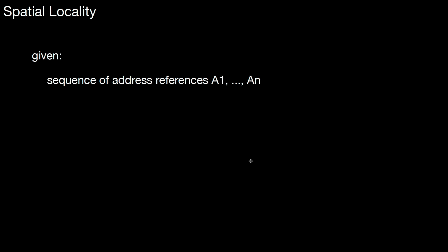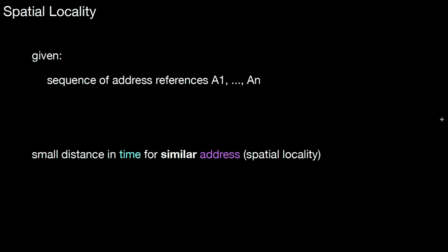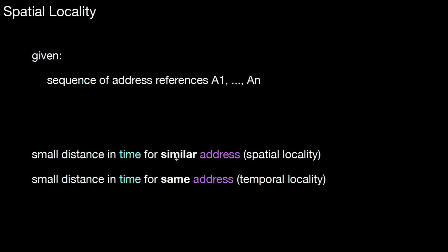There's also another concept called spatial locality. Spatial locality says there's a small distance in time for a similar address — that's the only change from temporal locality, which requires the same address. Spatial locality is therefore a generalization of temporal locality. Temporal locality is a special case of spatial locality, as it is more restrictive: requiring the same address rather than a similar address.